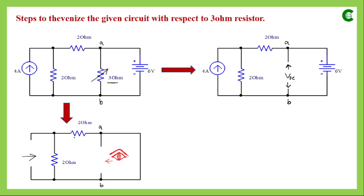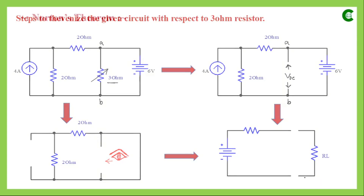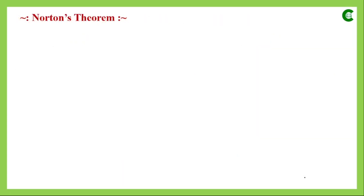After finding VTH and RTH, we connect back the RL that we removed in the first step to the equivalent circuit. VTH and RTH are connected in series, and then we connect back the load resistor or variable resistor with the Thevenin's equivalent voltage and resistance. This is how we apply Thevenin's theorem to simplify an electrical network. Next we will see how to apply Norton's theorem.